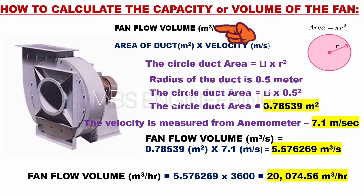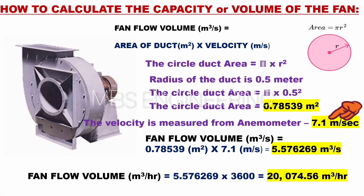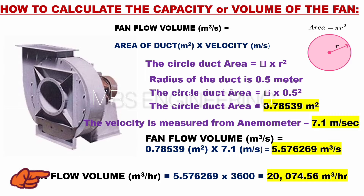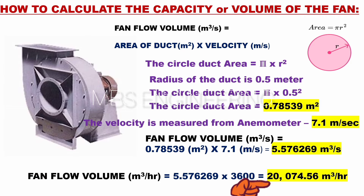The fan flow volume or capacity is equal to the velocity multiplied by the suction ducting area. The anemometer-obtained suction velocity is 7.1 meters per second, and the suction ducting area is 0.78539 square meters, giving a fan flow volume of 5.576269 cubic meters per second. Converting to cubic meters per hour: 5.576269 × 3600 = 20,074.56 cubic meters per hour.